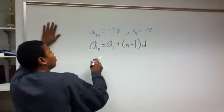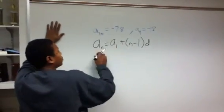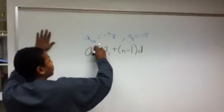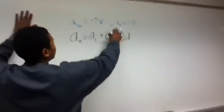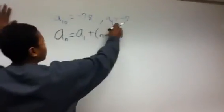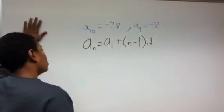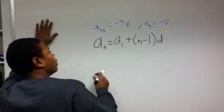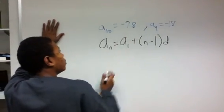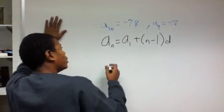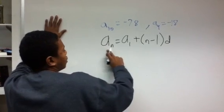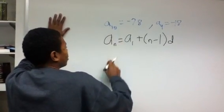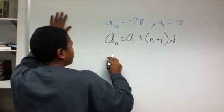We know that a sub 10 equals negative 78 and a sub 4 equals negative 18. We're trying to find a rule for that, so we can plug our numbers into the equation. Let's say a sub n is a sub 10.